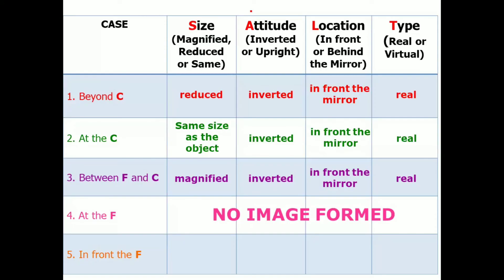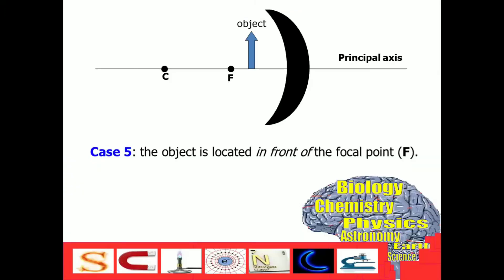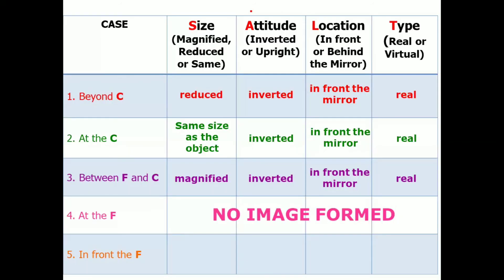How about the last case? If we place the object in front of F, the image will appear like this. Let's describe its characteristics. The image formed in the fifth case is magnified. And as you observe, its orientation or attitude is upright. And it is formed behind the mirror. Therefore, the type of image formed by our last case is virtual image.